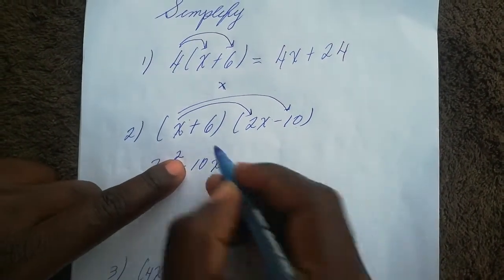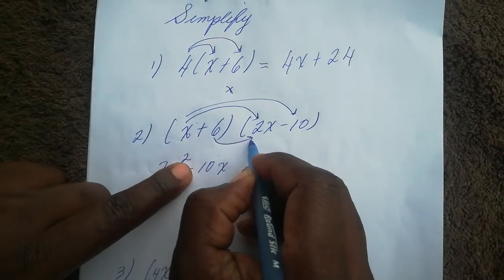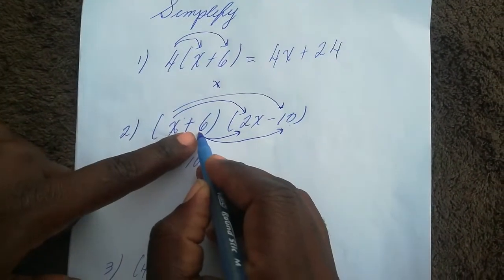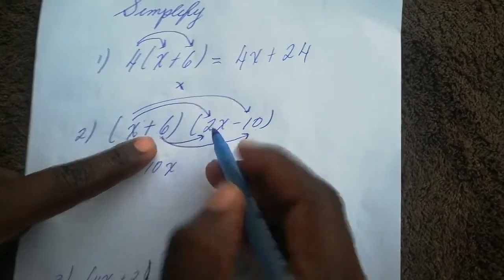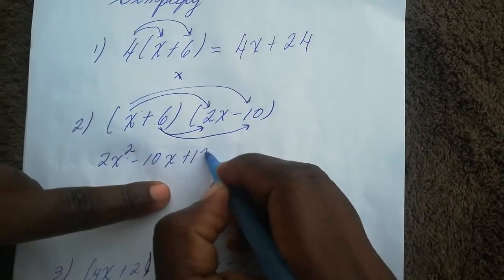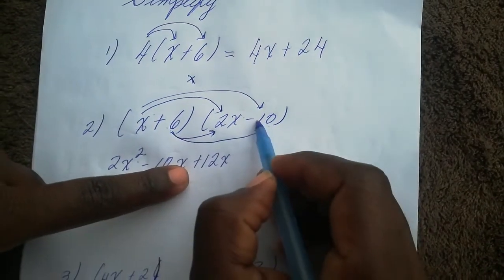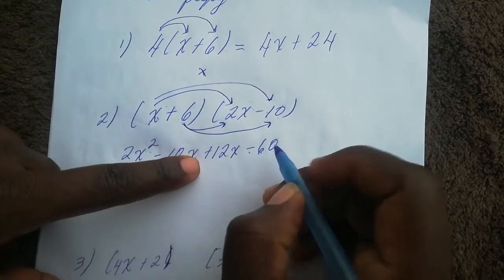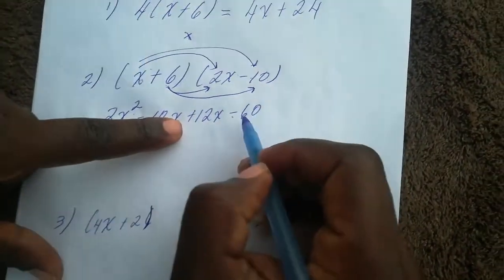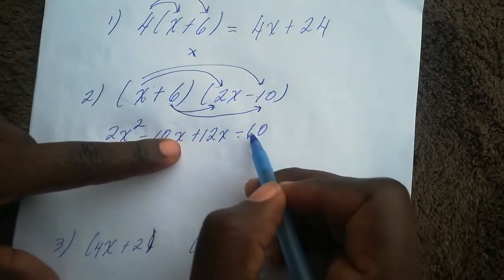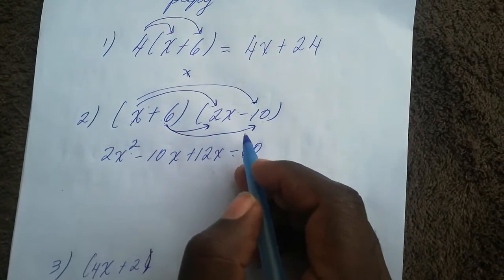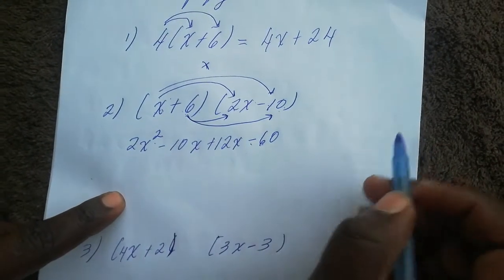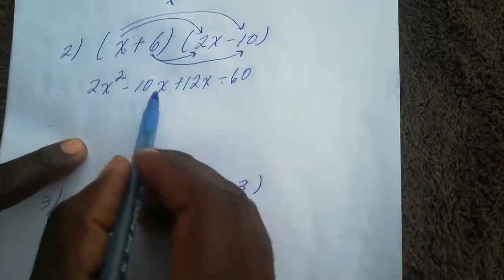Then we multiply the second term by everything in the second bracket. Positive 6 times 2x gives me positive 12x, and positive 6 times negative 10 gives me negative 60. Remember the law of signs: a positive and a negative gives a negative. The only time you get a negative is when the signs are not the same.